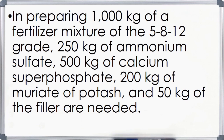In preparing 1,000 kg of fertilizer mixture of the 5-8-12 grade: 250 kg of ammonium sulfate, 500 kg of calcium super phosphate, 200 kg of muriate of potash, and 50 kg of filler are needed. That is how to compute for the fertilizer. I hope you follow and understand.